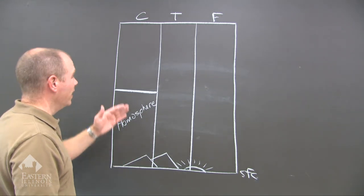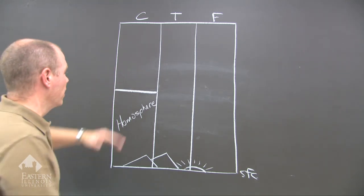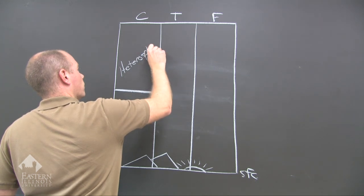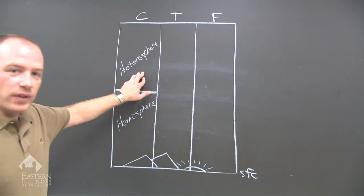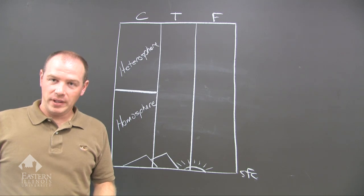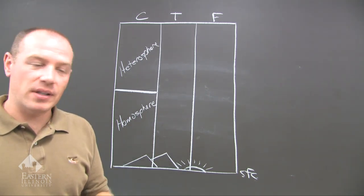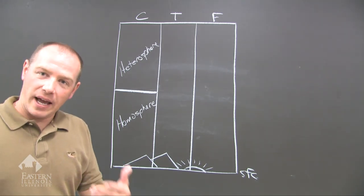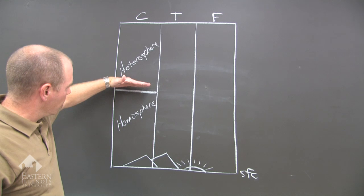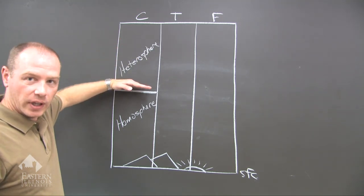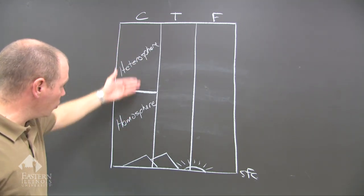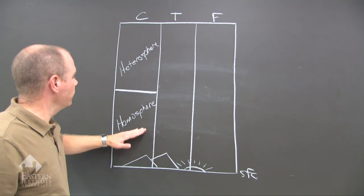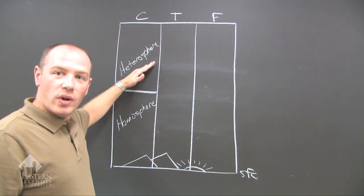On the opposite side, further away from the surface, is the heterosphere. In the heterosphere, the gases do not mix well. What happens is they're layered according to their atomic weight. The heavier gases are going to be closer to the surface of the Earth within this shell. So those are the only two shells in the atmosphere for composition: the homosphere, where the gases mix well, and the heterosphere, where they do not.